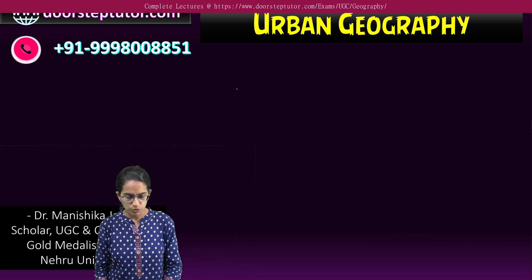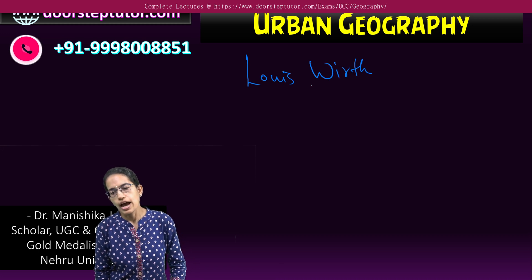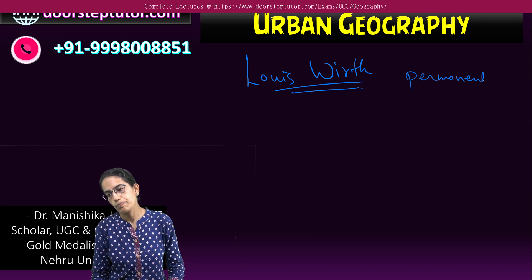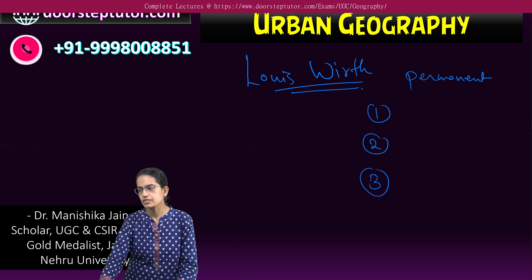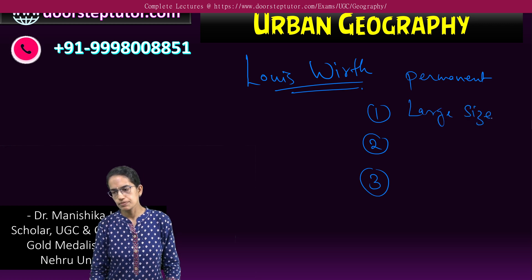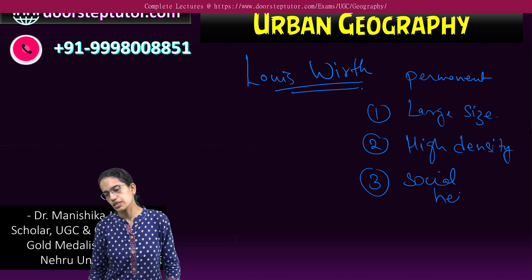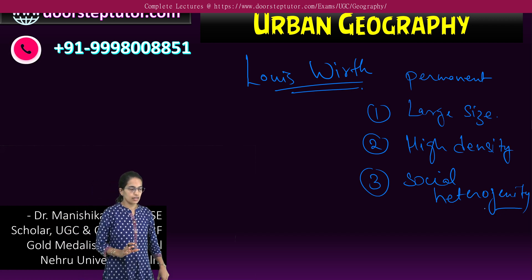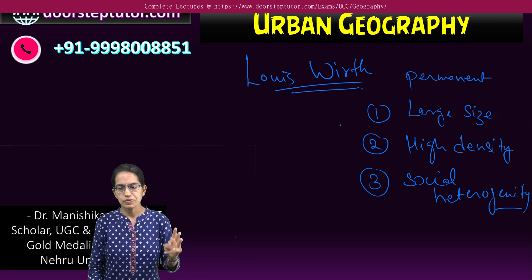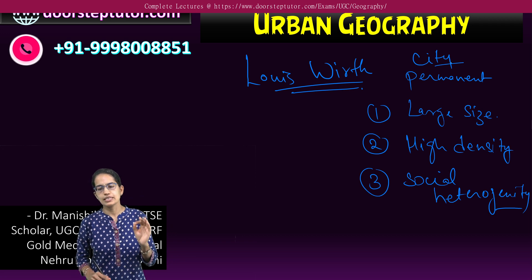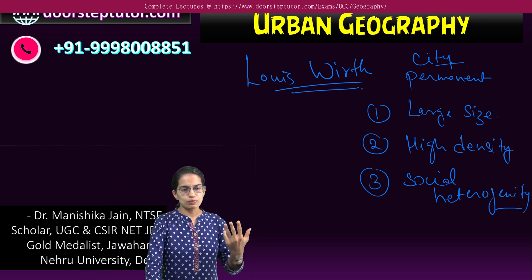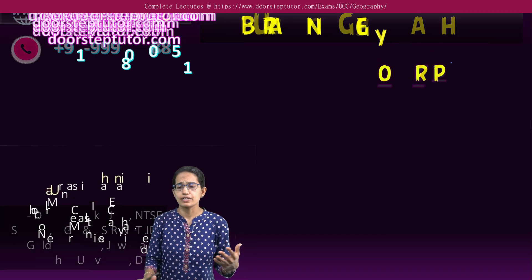Various scholars have given their viewpoints. Lewis Wirth is one of those, and according to him, a city is a permanent settlement that must have three important characteristics: a large size, a high density, and social heterogeneity. That means people must be from different segments of society — different racial, ethnic, and economic backgrounds — coming together to form the city.